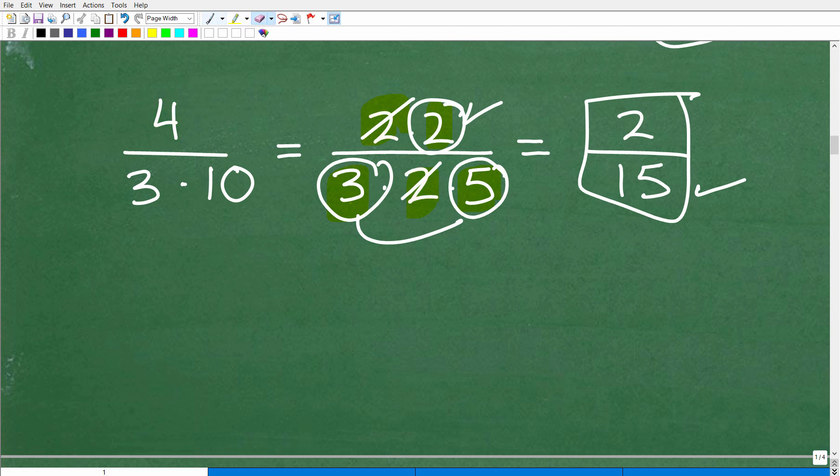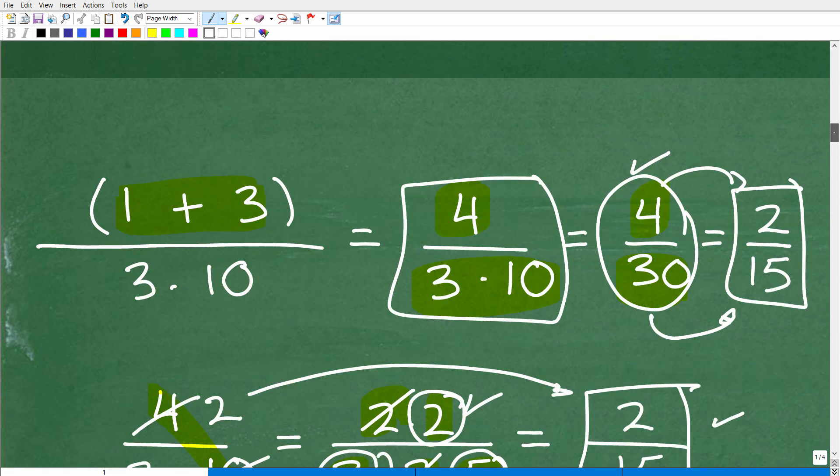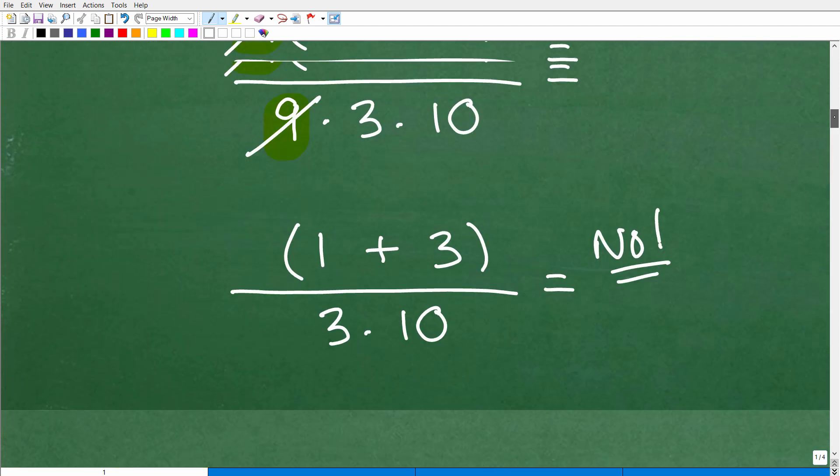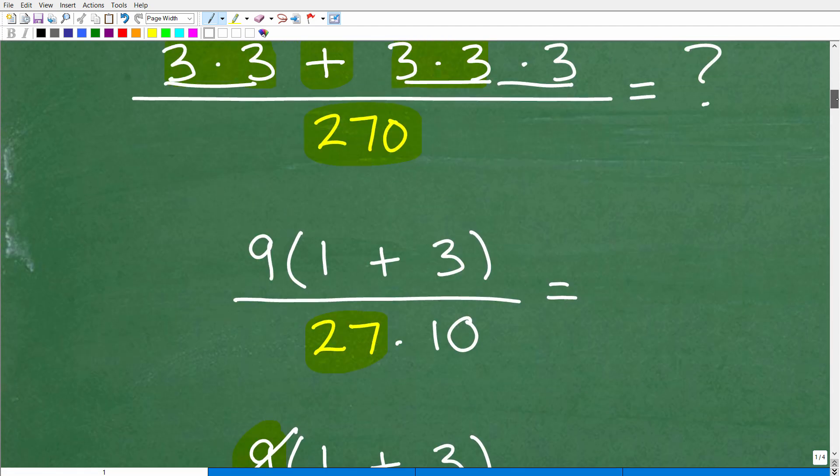Now, another way you could approach this is say, okay, 4 and 10, okay? You're looking at this, I would say 2 goes into 4, 2, and 2 goes into 10, 5. So 2 over 3 times 5 is 15. So depending on how you kind of learn how to reduce fractions and cross-cancel like factors, you know, there's just different approaches to it. But the bottom line is this is the correct answer, 2 fifteenths. But if you took a different approach but got the same answer, that's excellent as well.